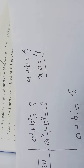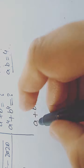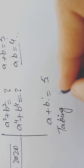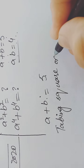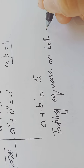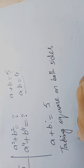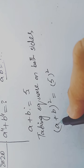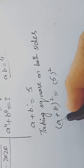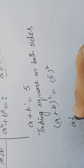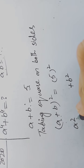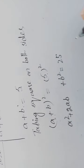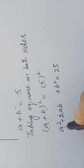To find a² + b², we will take the square on both sides. That is, (a + b)² = 5². The square of (a + b) is a² + 2ab + b², and the square of 5 is 25.